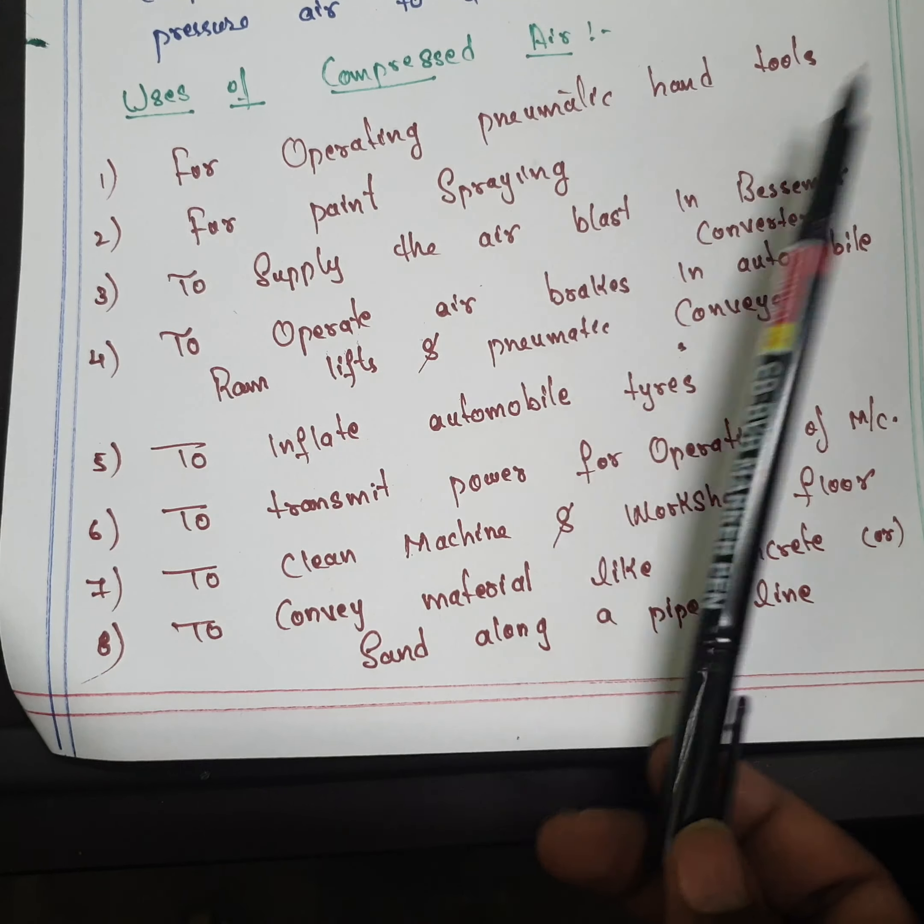Third use: to supply the air blast in a Bessemer converter. In a Bessemer converter, by adding chemicals, steel and slag are produced, and compressed air is supplied as an air blast. Fourth: to operate air brakes in automobiles — many buses and lorries use air brakes at the rear, maintaining a specified distance.